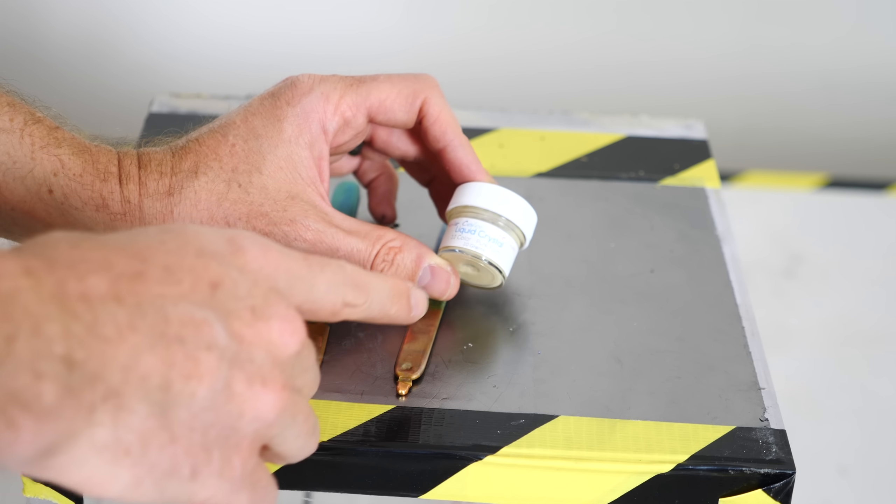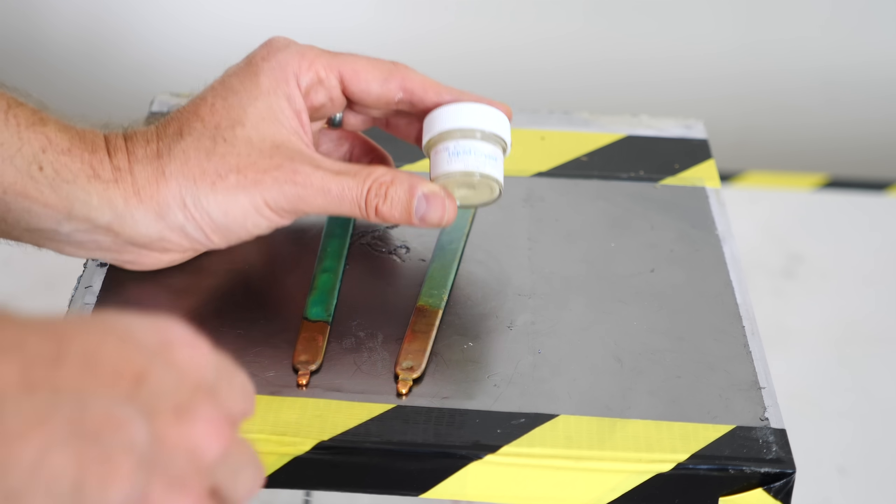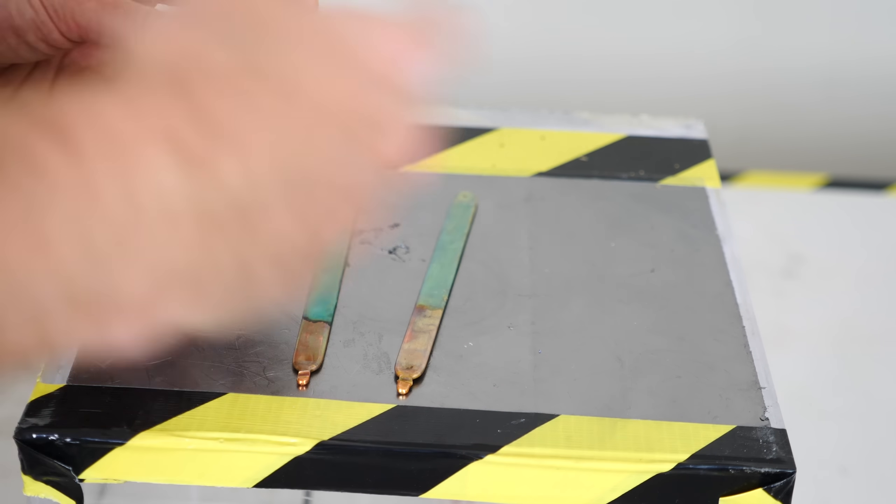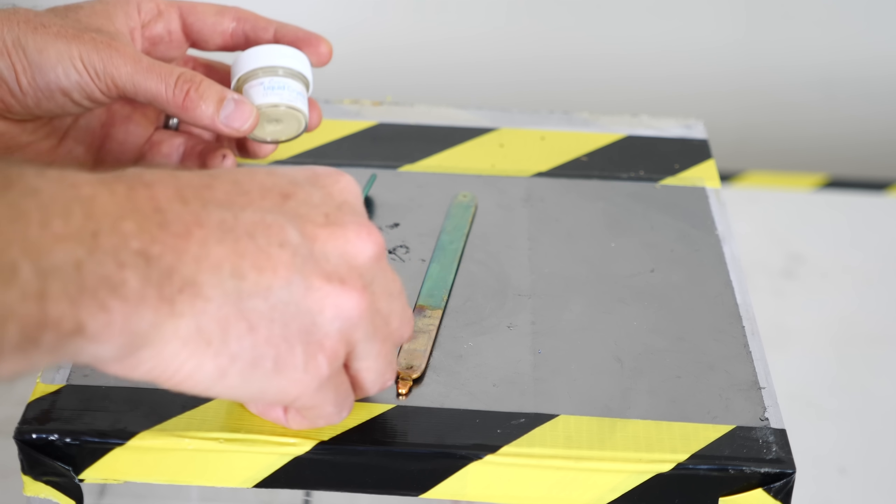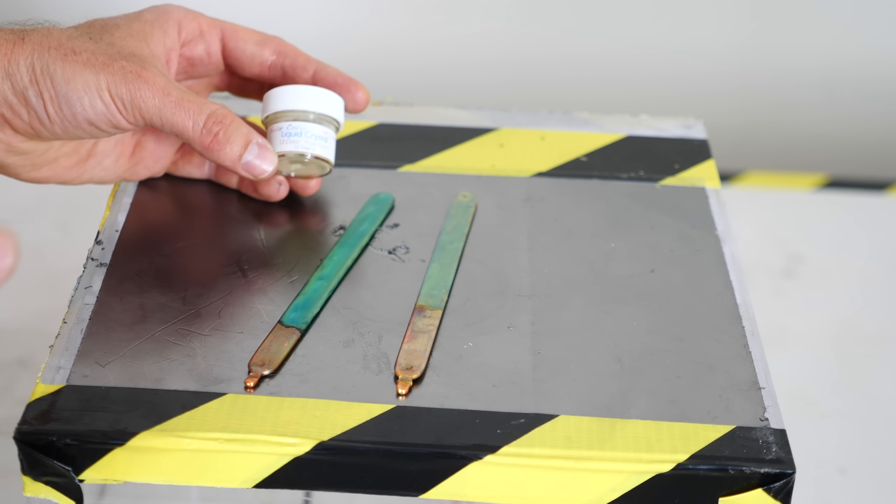So I got this liquid crystal paint from a place called solarcolordust.com. I'll put a link in their description. They actually sponsored this video and sent me all these cool paints. And what's amazing about this liquid crystal is it changes color depending on the temperature of it.